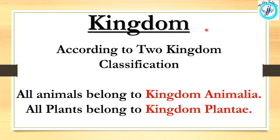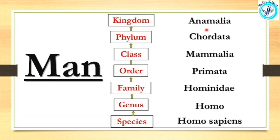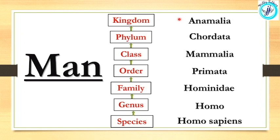Kingdom is the largest group of organisms. In this chapter, we look at the two-kingdom classification: all animals belong to kingdom Animalia and all plants belong to kingdom Plantae. For hierarchical representation, the example of modern man: species is Homo sapiens, genus is Homo, family is Hominidae, order is Primates, class is Mammalia, phylum is Chordata, and kingdom is Animalia.